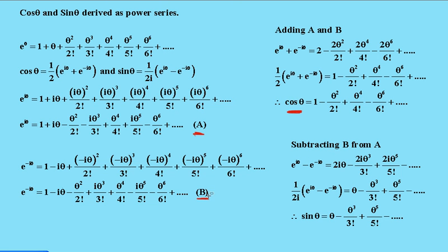By subtracting equation B from A, we'll notice this time the 1s will cancel out and I get 2i theta. Again, this pattern alternates, but this time I take out 2i as a common factor and divide both sides. And of course, 1 over 2i times e to the i theta minus e to the minus i theta is sine theta. That's the power series for sine theta: theta minus theta cubed over factorial 3 plus theta to the fifth over factorial 5.